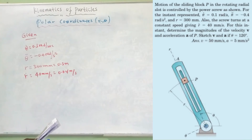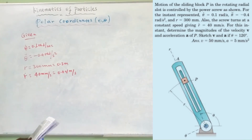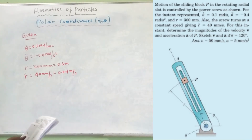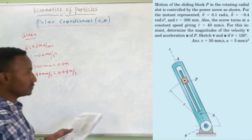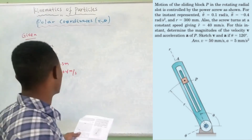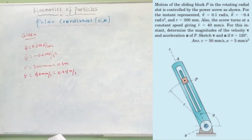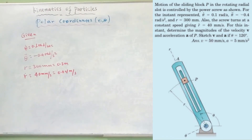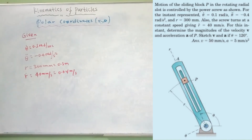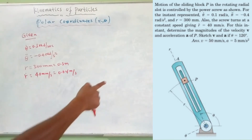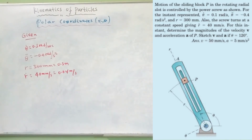Sketch V and A if theta is equal to 120 degrees. Determine the direction of velocity V and acceleration A at that angle.